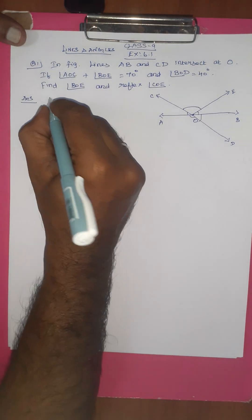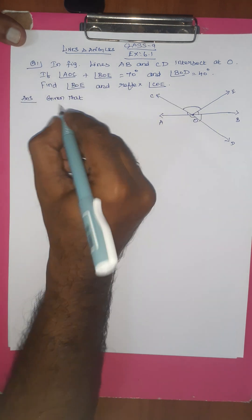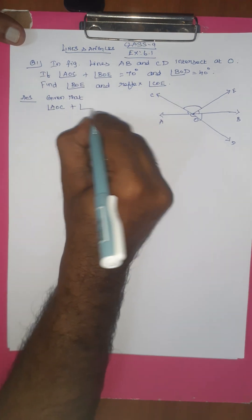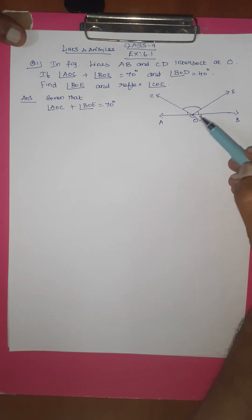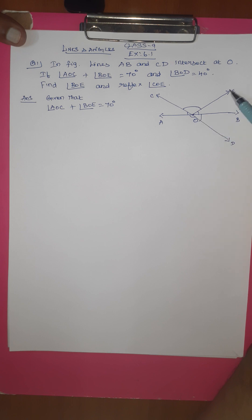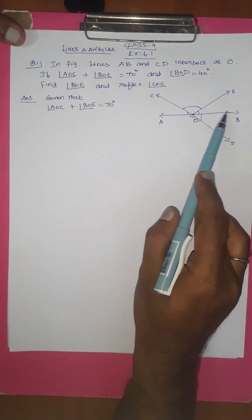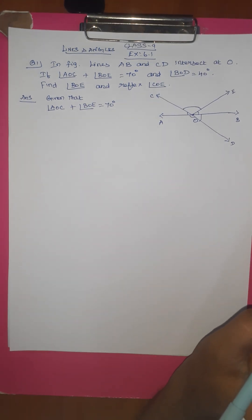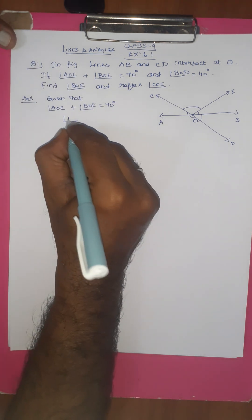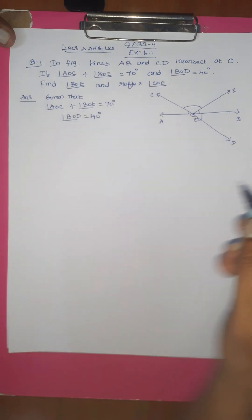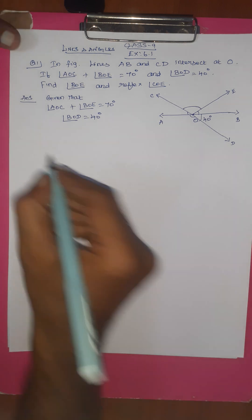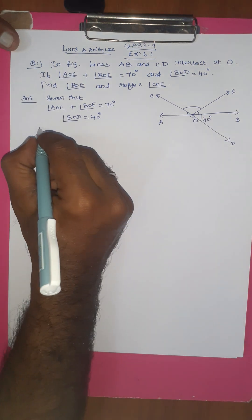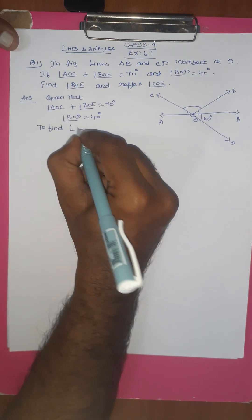So the answer — first, given: angle AOC plus angle BOE equals 70 degrees. Angle BOD equals 40 degrees. We have to find angle BOE.